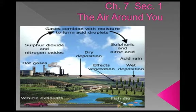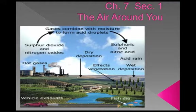Rain is naturally slightly acidic, but rain that contains more acid than normal is known as acid rain. The burning of coal that contains a lot of sulfur produces sulfur oxides — substances composed of oxygen and sulfur. Acid rain forms when nitrogen oxides and sulfur oxides combine with water in the air to form nitric acid and sulfuric acid. Acid rain is sometimes strong enough to damage the surface of buildings and statues. It also harms lakes and ponds.